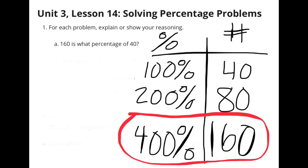100% of 40 is 40, and if you double that you'd have 200% of 40, which is 80. Double that and you have 400% of 40, which is 160. So 160 is 400% of 40.